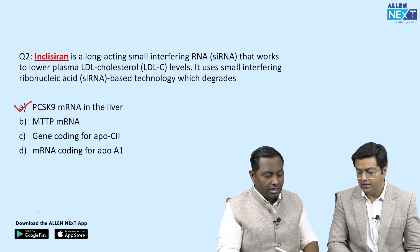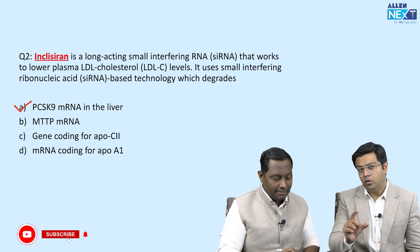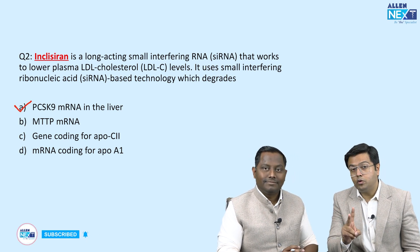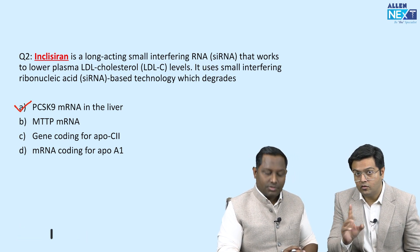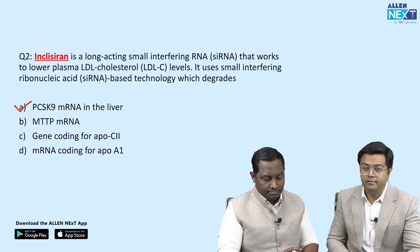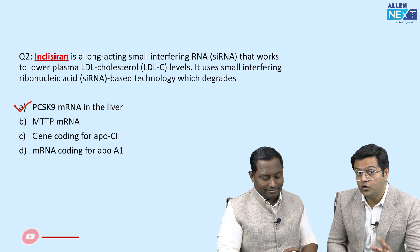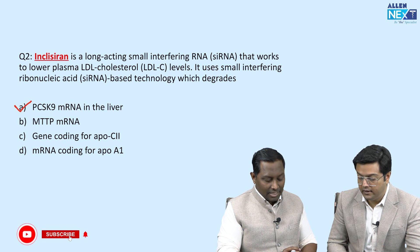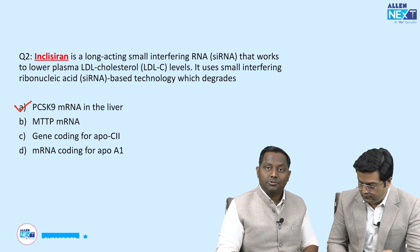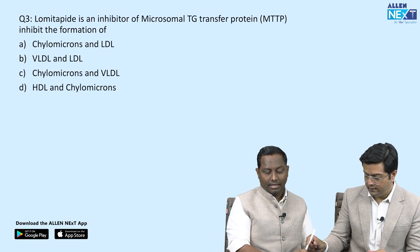These PCSK9 inhibitors — alirocumab, evolocumab, and the newer inclisiran — are mainly used in familial hypercholesterolemia, which is the genetic condition. Familial hypercholesterolemia is also called type 2 hyperlipidemia. Examiners may use either name, so we should know both.